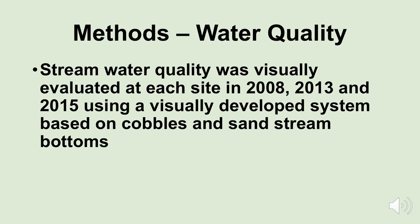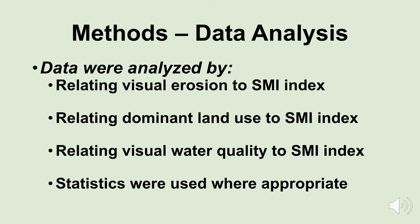We tried to relate the benthic macroinvertebrate value we got by sampling to erosion rates on land and to visual diagnosis of water quality in the stream. The visual evaluations of water quality in the stream and the erosion rates are not very repeatable — each of us would have a bias, and we may not be able to come up with the same score when we came back and did it again. So the data we collected — we wanted to relate our visual erosion rates to the SMI index, the dominant land use to the SMI index, and visual water quality to the SMI index. We used statistics wherever they were appropriate.